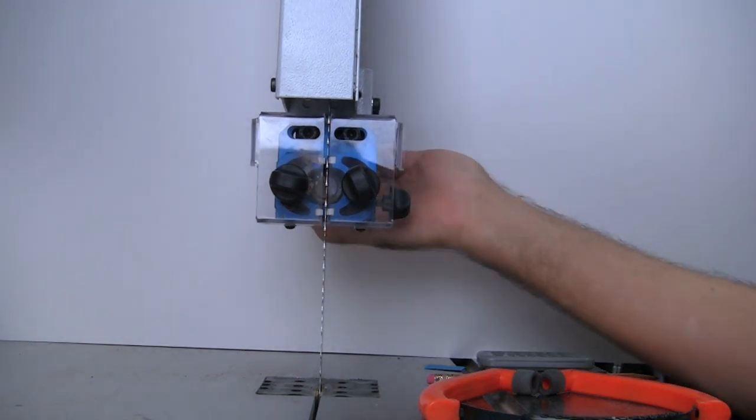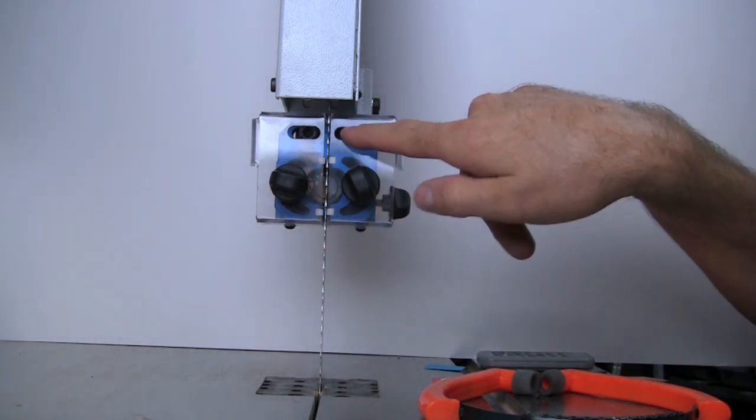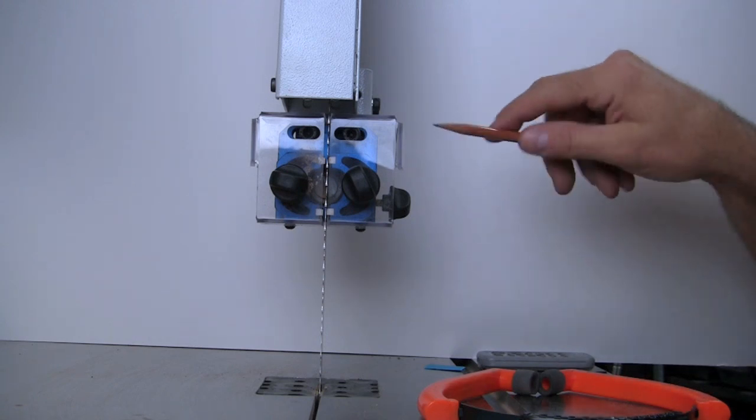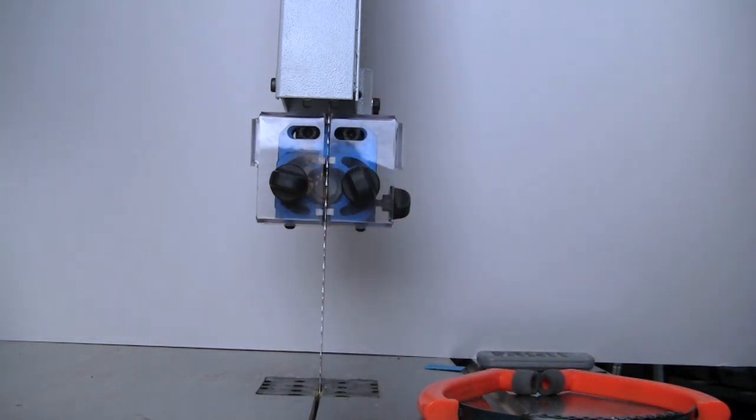At the bottom of that guide is a large block of aluminum that has two threaded holes. Those are the holes for these cap screws that you see through this acrylic guard that's in the front. Now the guard is only on the top guides.